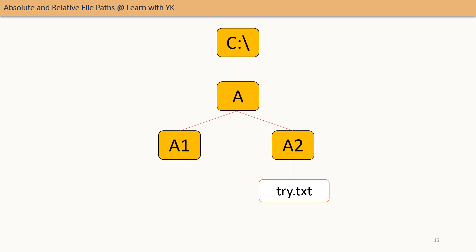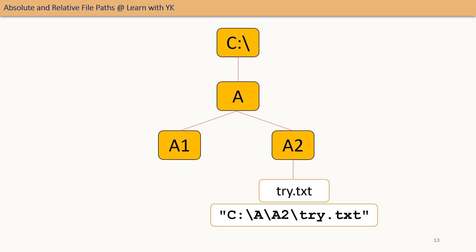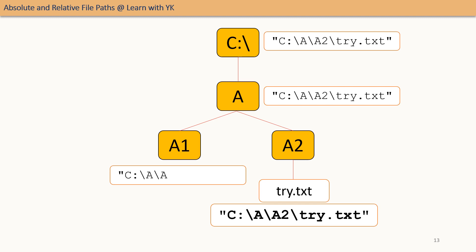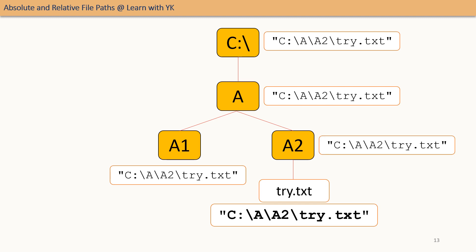Let us now see the absolute reference of this file. The absolute reference will be C:\A\A2\try.txt. This means: there is a C drive, which contains folder A, which contains folder A2, and in A2 there is the file try.txt. This absolute reference is independent of the code's location and will work from any folder in any drive on the computer which contains this directory structure. This is called the absolute reference, and the path specified is the absolute path.